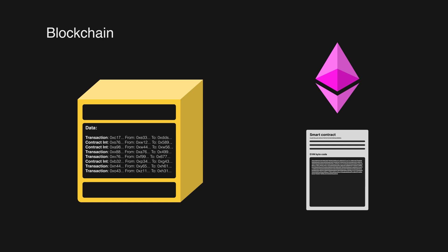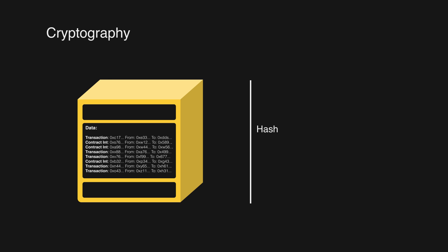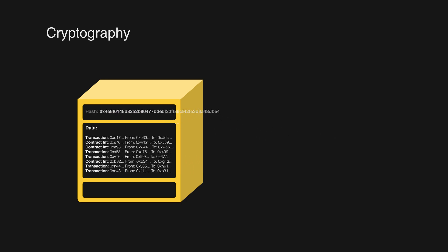We'll discuss smart contracts at a later stage. For now, just understand that the contents — the data of a block — consists of records. But how do we make sure that these records are immutable after a block has been created? This is where cryptography comes into play. What essentially happens is that the contents of this block, its records, makes up a hash, and this hash is the identifier of this block.